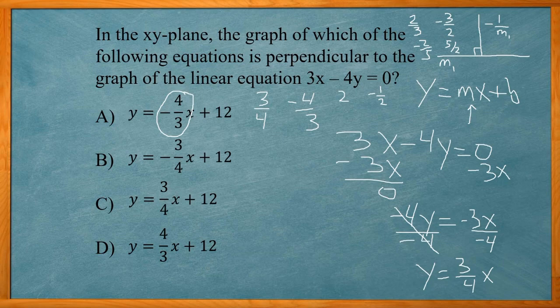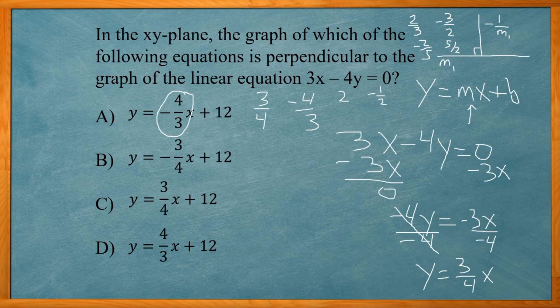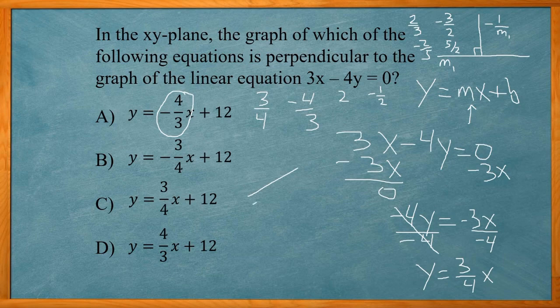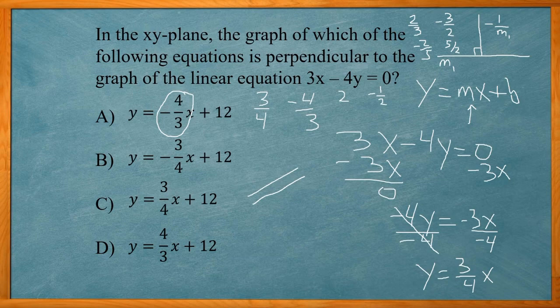So in this problem, we need to figure out the slope of a line. You need to know what perpendicular meant. Another thing that goes with perpendicular is parallel. Two lines that are parallel have the same slope. They won't ever intersect.